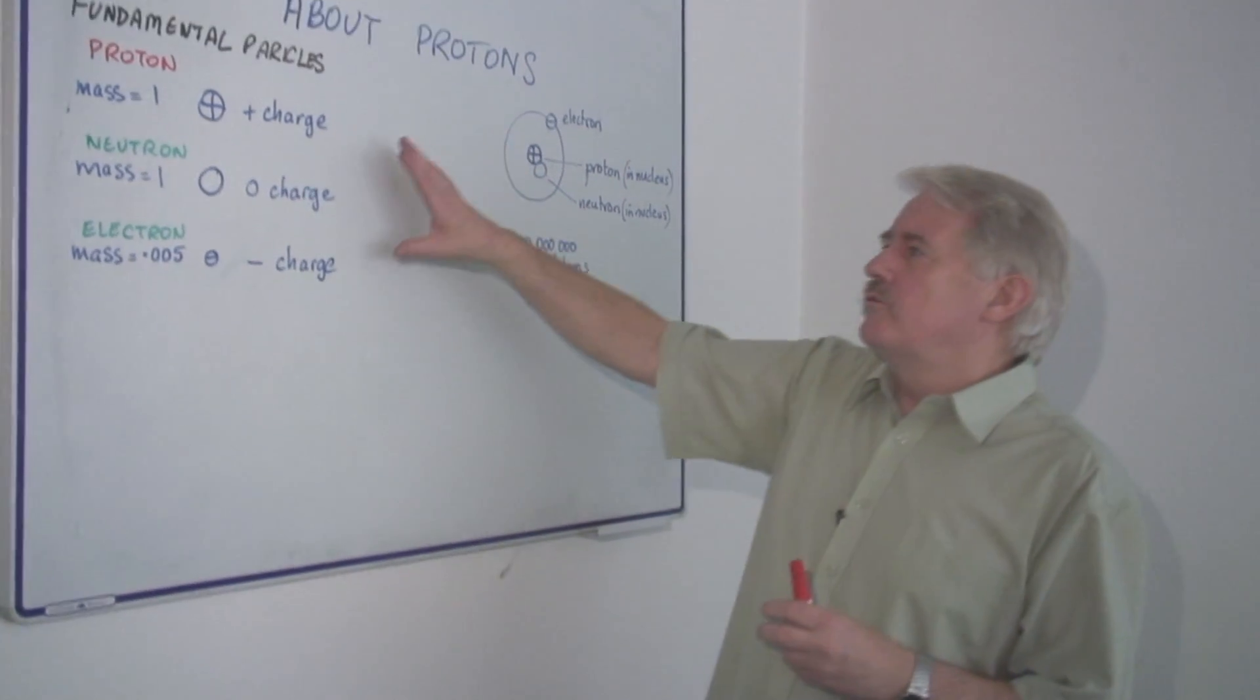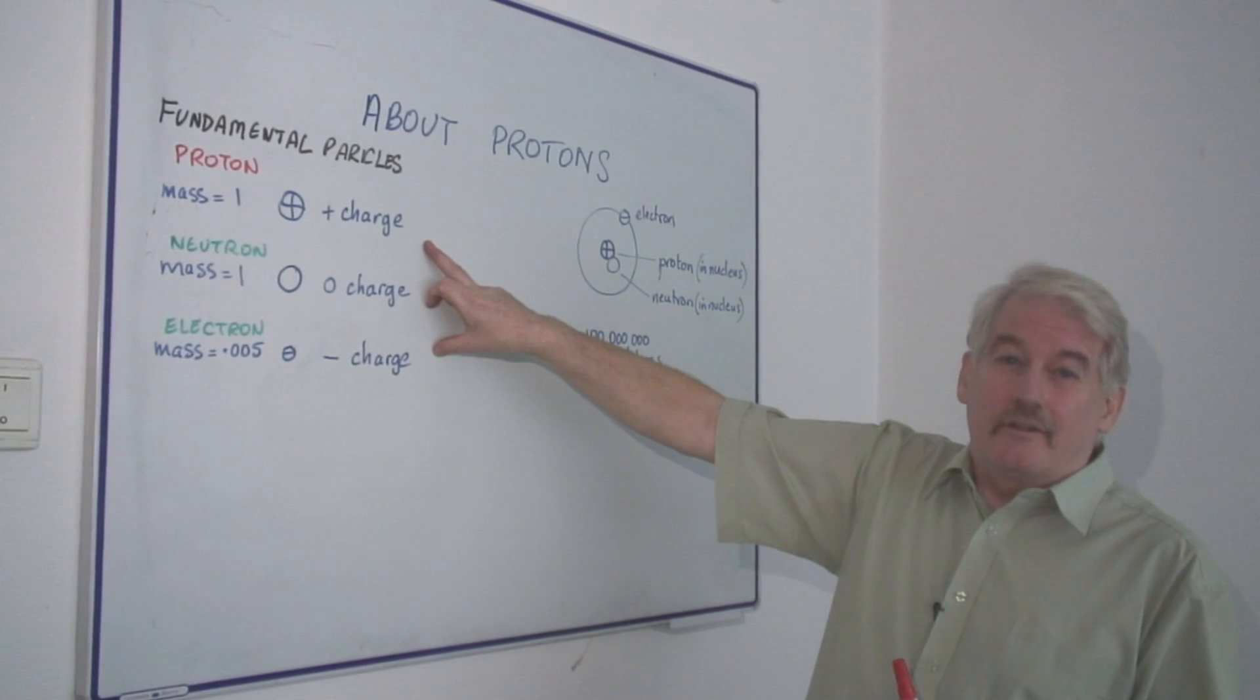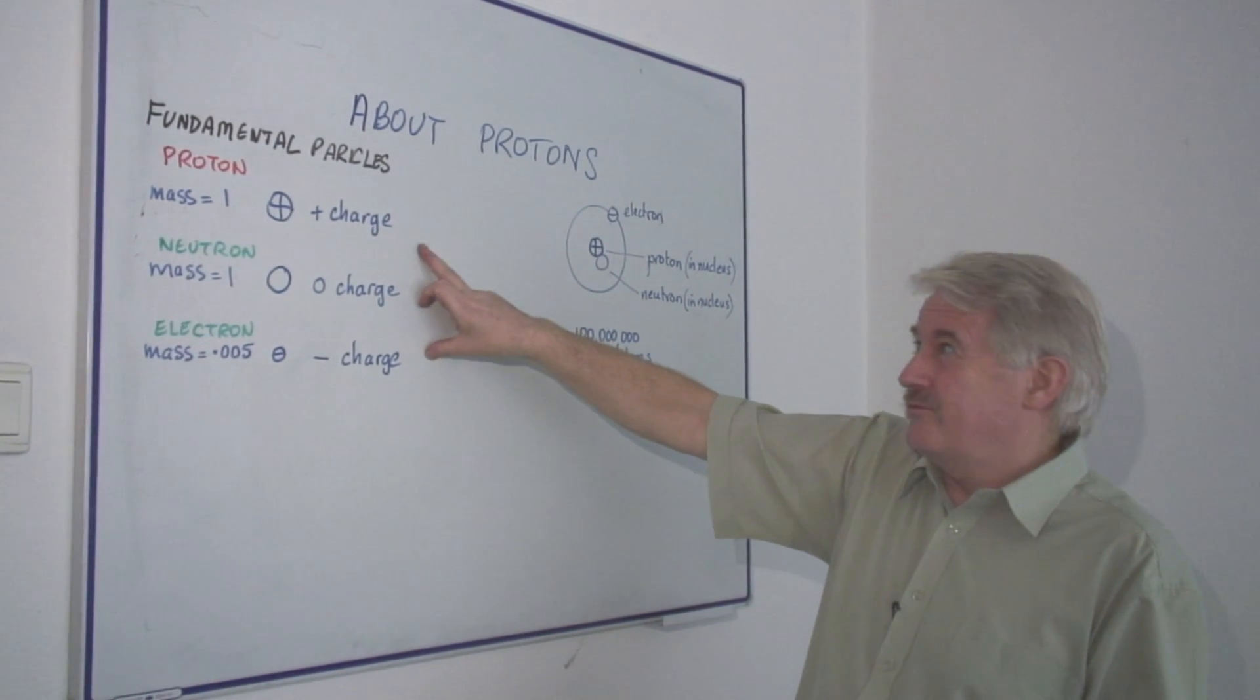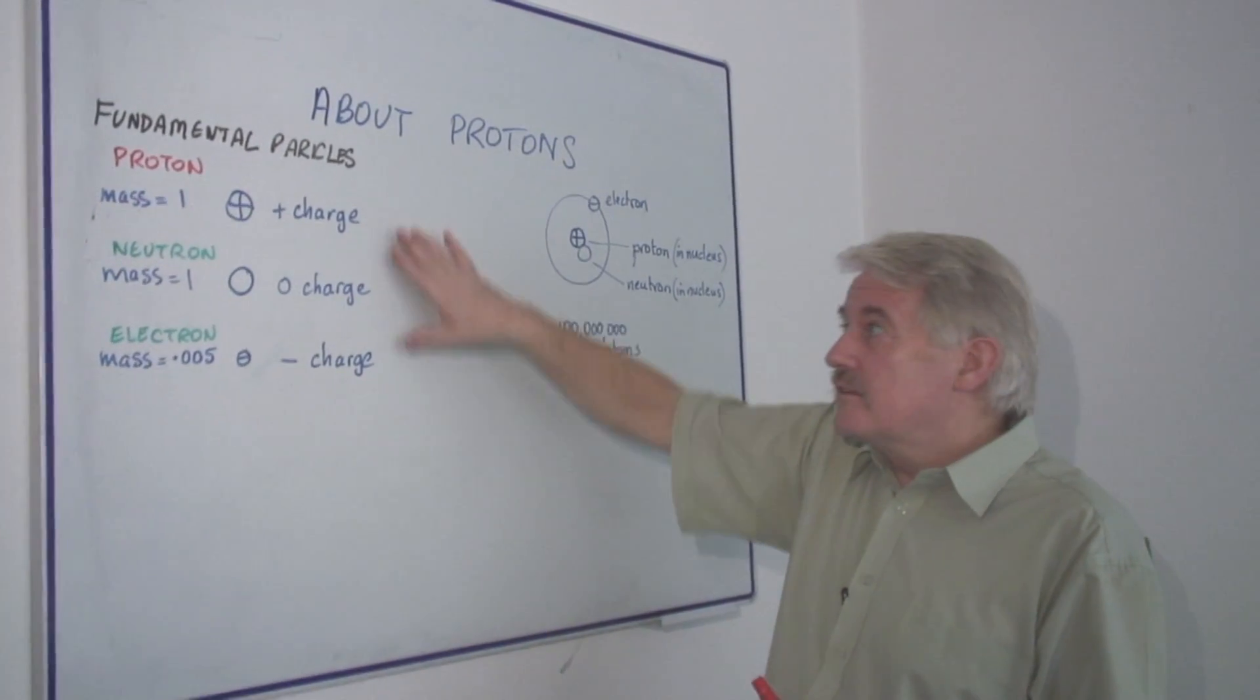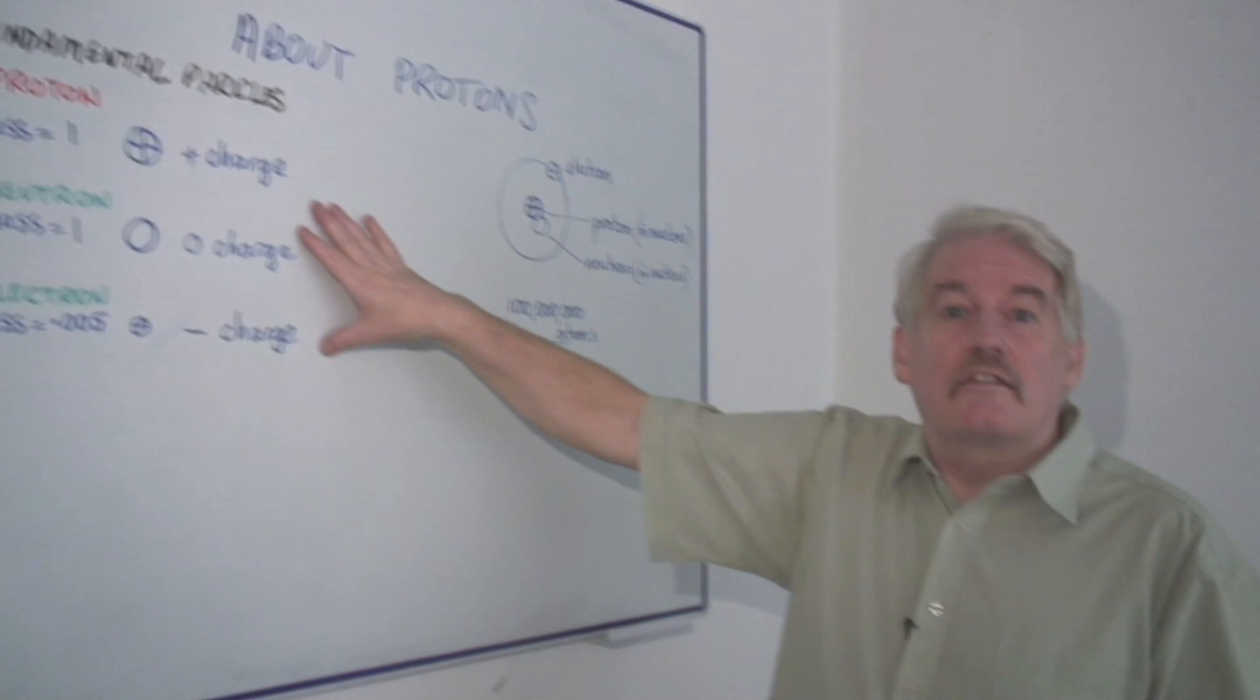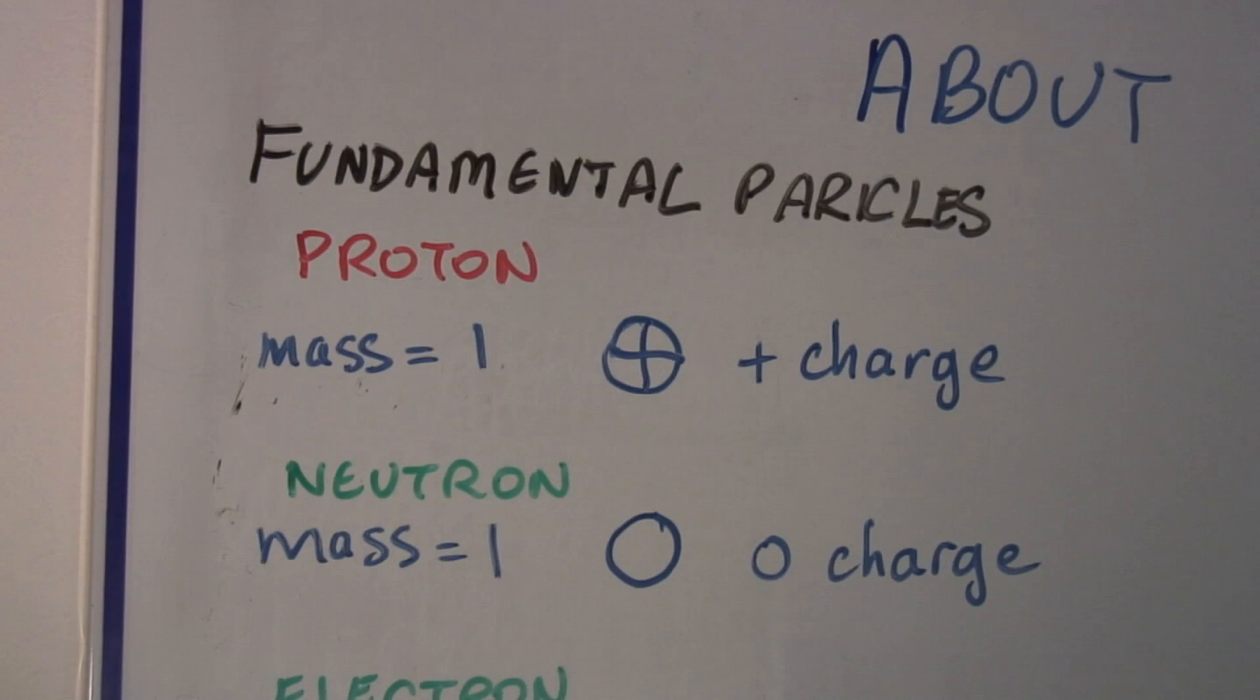Protons are one of what we call the three fundamental particles. Don't worry about all of the other nearly a hundred fundamental particles that exist nowadays. This is good enough for us to understand the basics of what elements and materials are about. Everything is made up of these three: protons, neutrons, electrons.